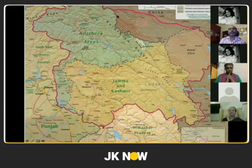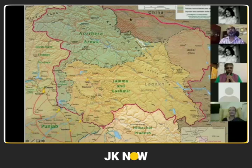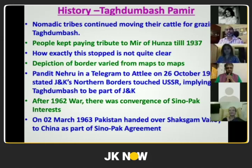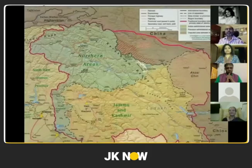If you see India's official map today, the boundary goes along the Shaksgam Valley boundary. Old Indian maps invariably show this line. Takdumbash Pamir, north of Shaksgam, touched Soviet Union. People used to pay taxes to Mir Kunjut in 1937. Pandit Nehru, as late as 26th October 1947, stated that Jammu and Kashmir's northern borders touched the USSR, implying Takdumbash was part of Jammu and Kashmir. After the 1962 war, with China-Pakistan convergence, Pakistan handed over Shaksgam to China as part of the Sino-Pak agreement of 1963.